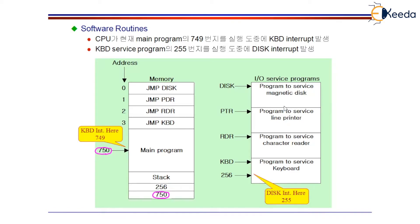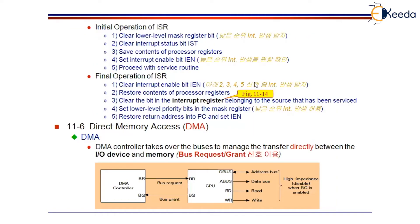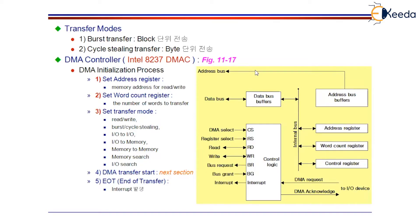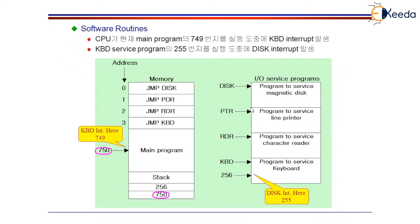This is the part of the main memory. All of the devices connected to the CPU have loaded their respective service routines in their respective portions of the main memory. When, let us say, a disk interrupts the CPU, immediately the CPU should be able to execute the program available in that space — the disk service routine is available from this location to this location. Let us say this location is from 200 to 300. So, the CPU should be able to execute all instructions within 200 to 300 the moment the disk interrupts.